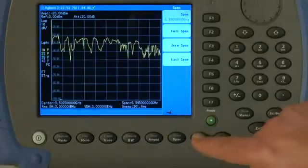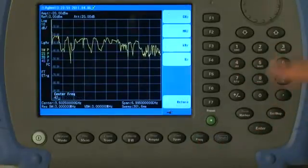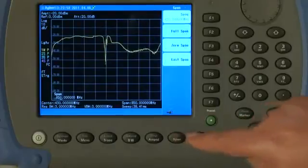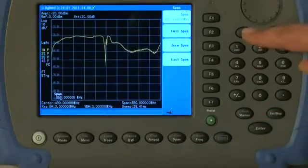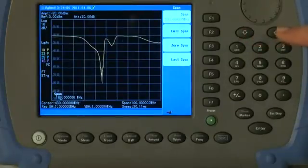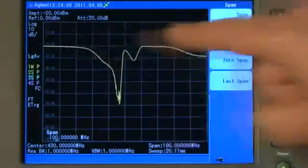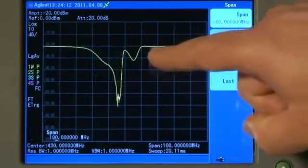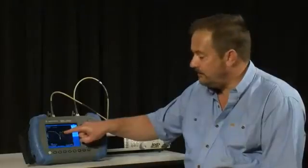So let us set a center frequency of, say, 430 MHz, and then I will press the span button. And using the arrow keys, I will just zoom in, and we can look at some of the detail here of the filter. We can see that it is a notch filter, and there is supposed to be a pass band here. One of the cavities of the filter looks like it is not lined up properly.